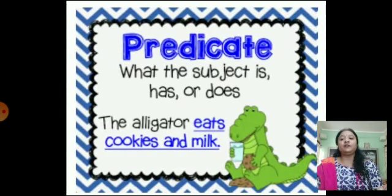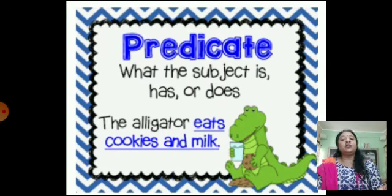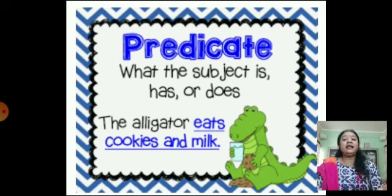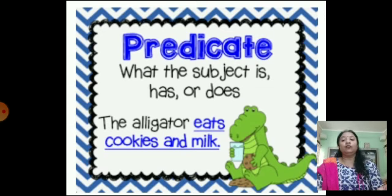The predicate is what the subject is, has, or does. In the same example, 'The alligator eats cookies and milk,' the alligator is the subject, and 'eats cookies and milk' is the predicate — it tells us what the alligator is doing.